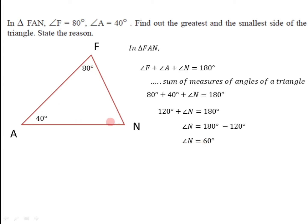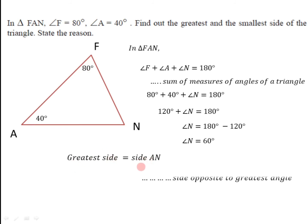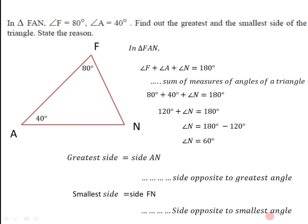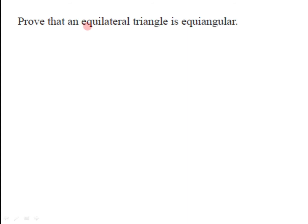Now we compare all three angles: angle F = 80°, angle A = 40°, angle N = 60°. Angle F at 80° is the greatest angle, so the side opposite to it — side AN — is the greatest side. Angle A at 40° is the smallest angle, so the side opposite to it — side FN — is the smallest side.